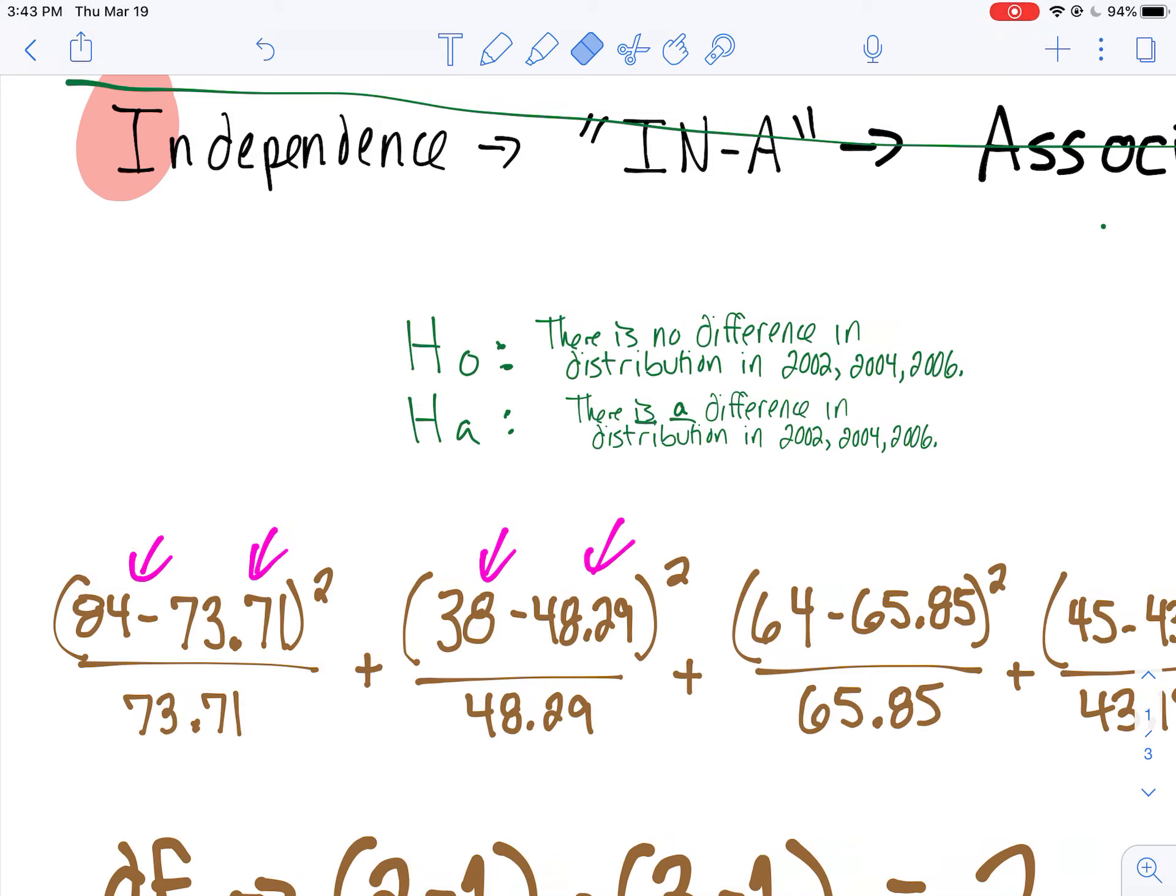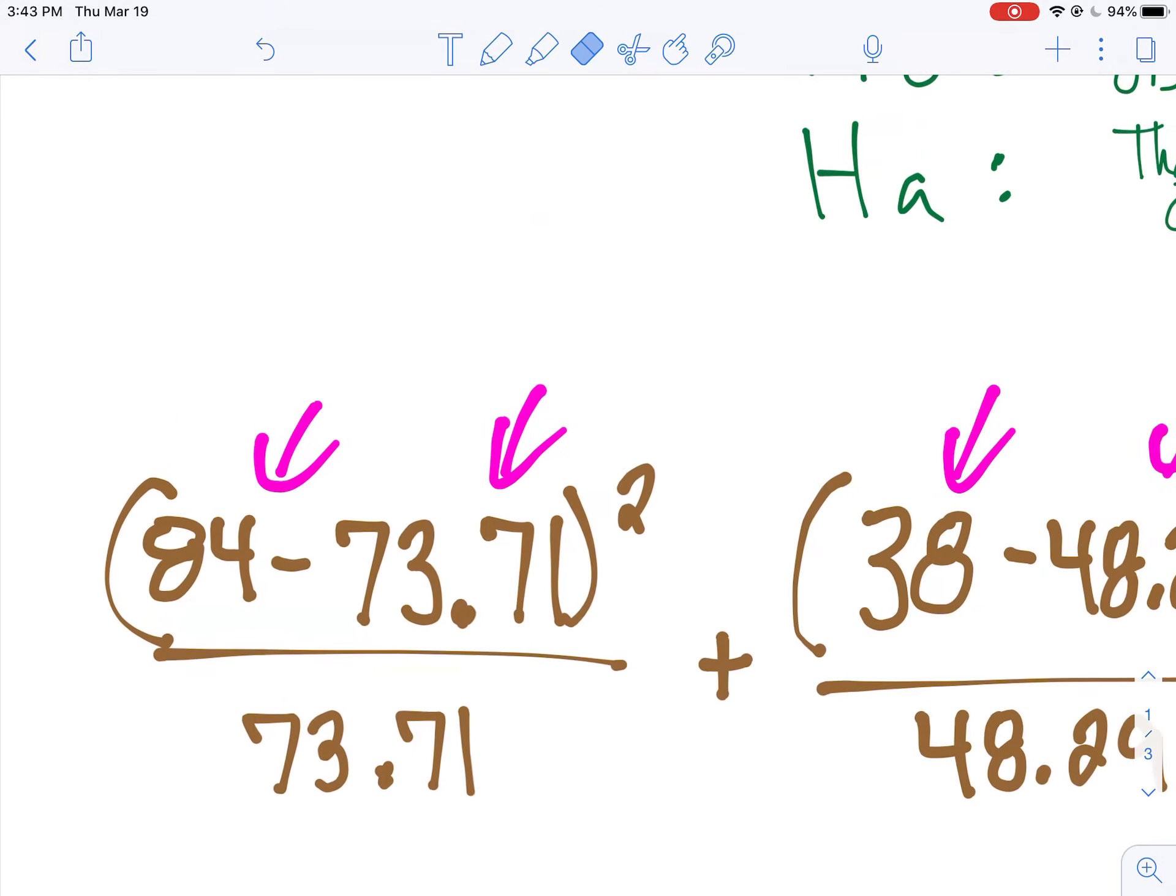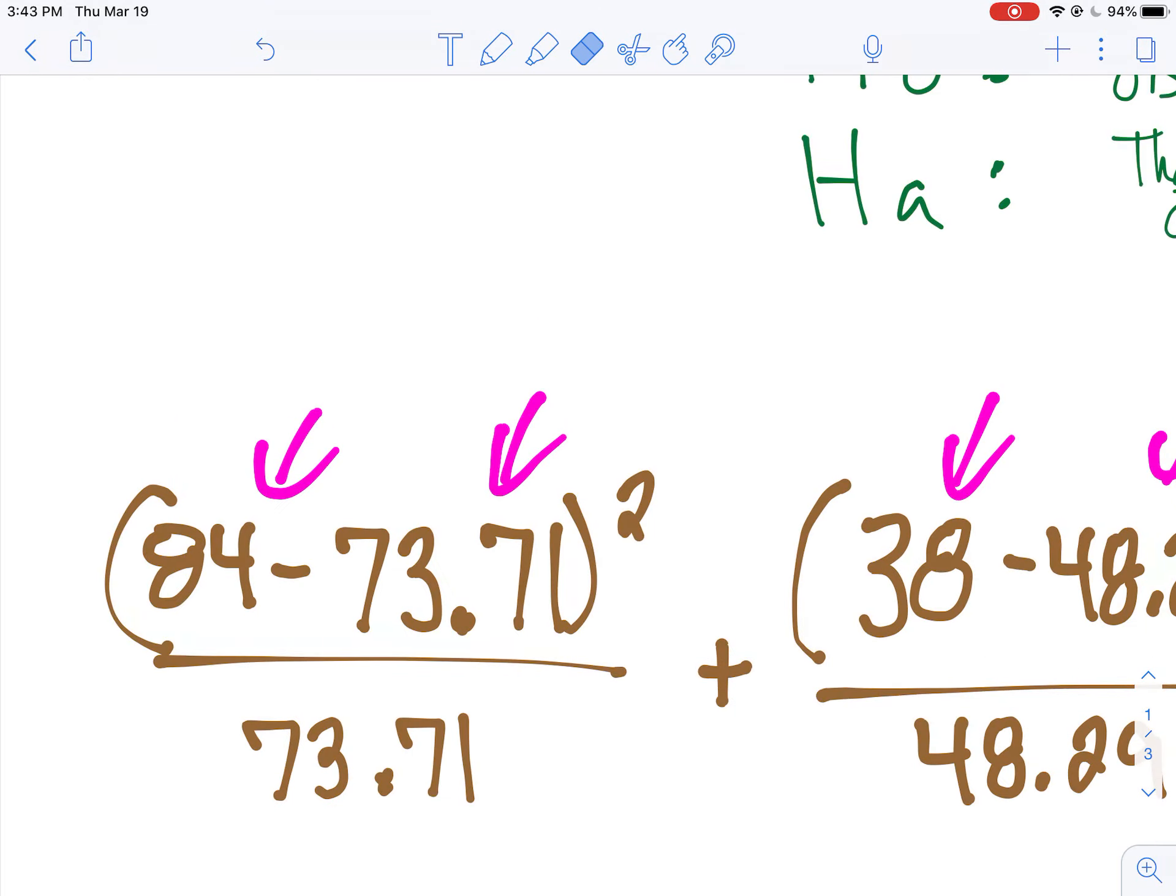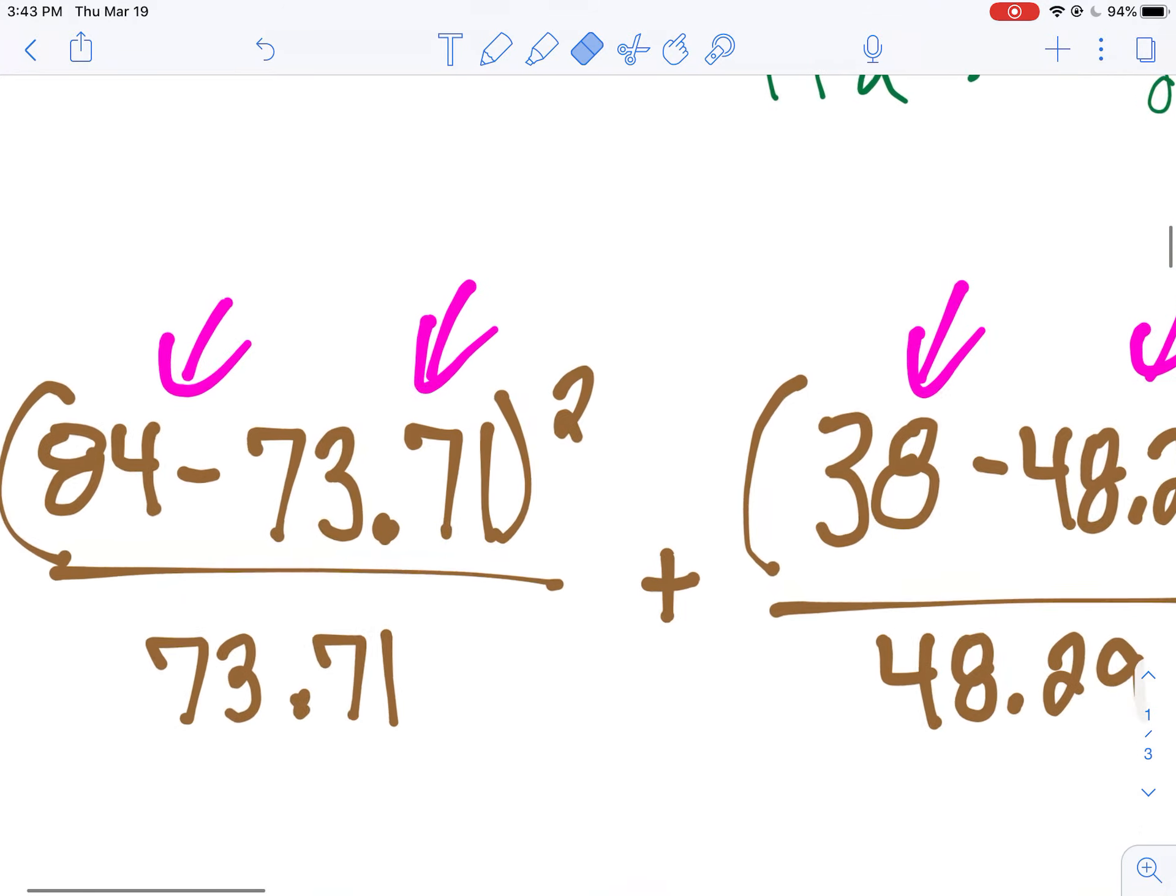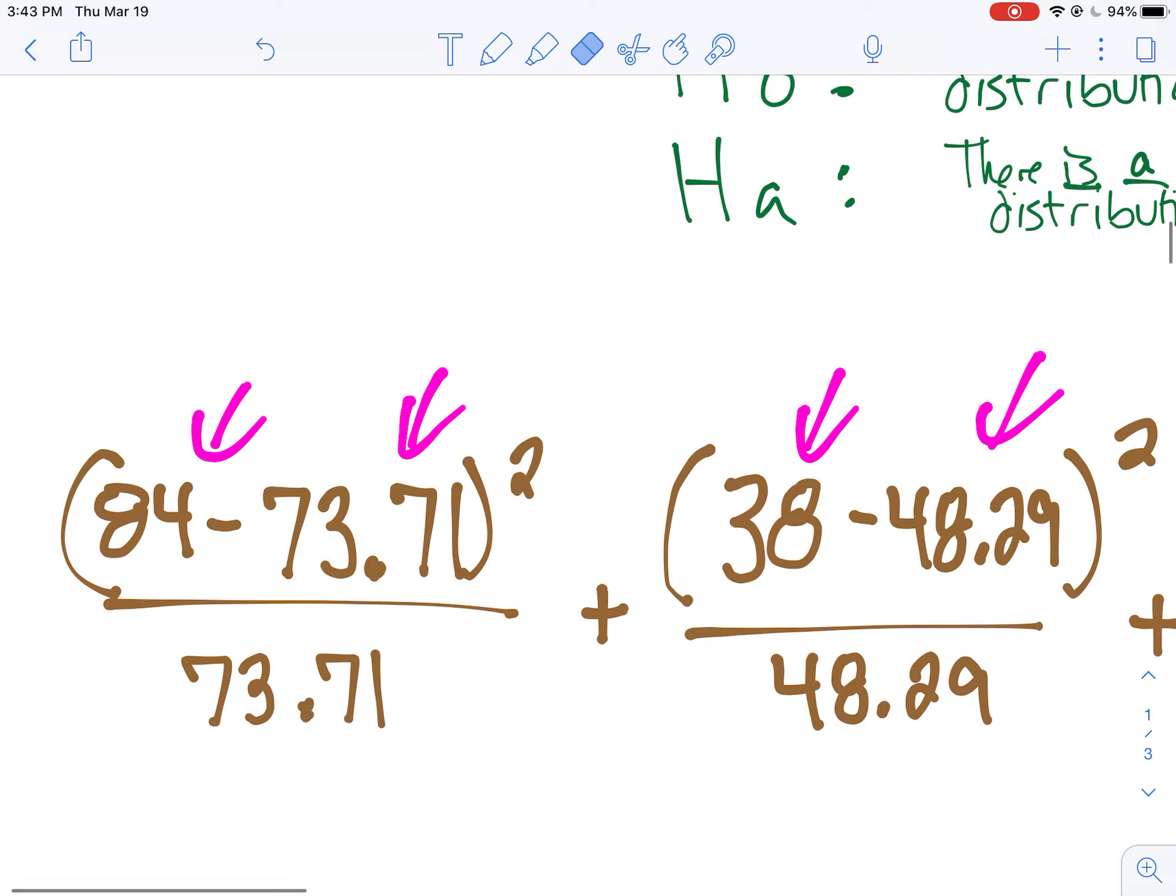They might give you a table and say, how would you find the chi-square statistic? Instead of just plugging it into your calculator, they'll give you the formulas written out like this, and you'll have to say, is this right? Each time, I took what I observed, minus what I expected, squared that, divided by what I expected. That's pretty typical.